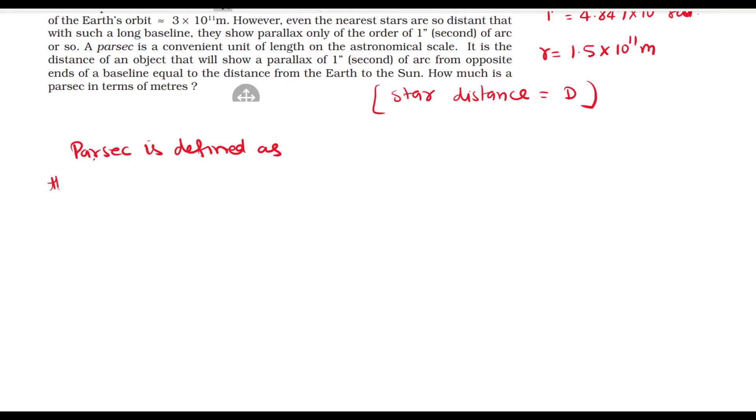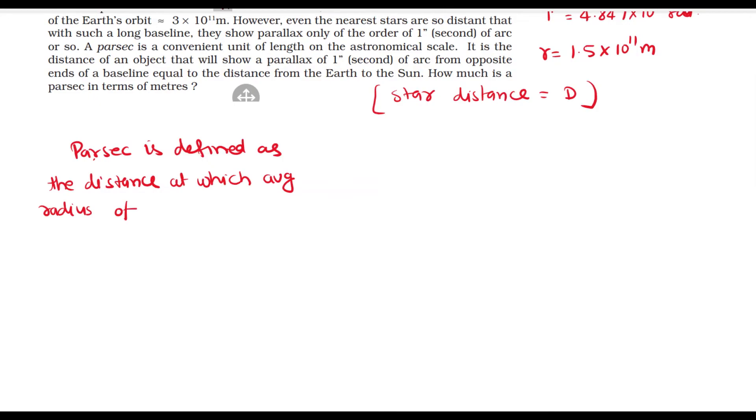the distance at which the average radius of Earth's orbit subtends an angle of one second. तो यह हमारे पास अगर angle की definition से देखें,